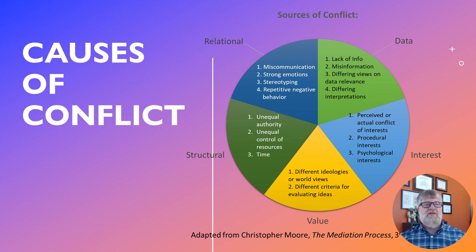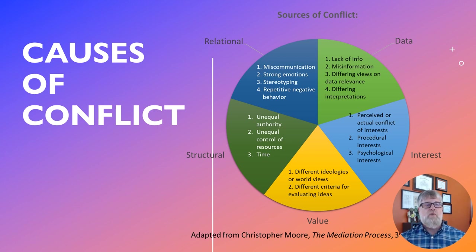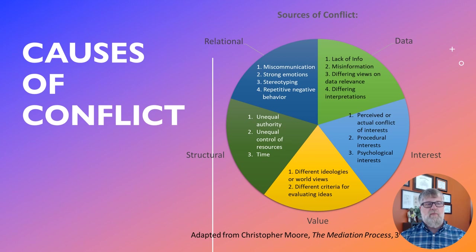The next source is value. We have different ideologies and worldviews — maybe somebody really favors independence and flexibility for employees, while somebody else is rigid and wants everything done in a very specific way. If both managers have remarkably different worldviews, they'll construct two subsets of the organization that are remarkably different. Next is structural conflict: if people have unequal authority, unequal control of resources, or unequal time, that is a potent source of conflict.